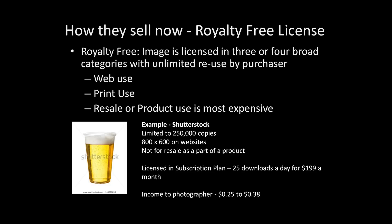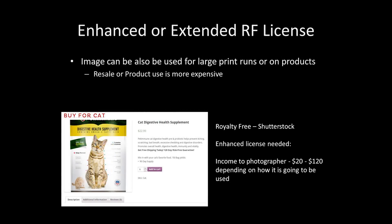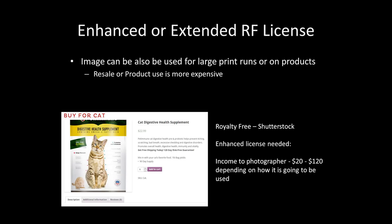On Shutterstock, many people have a subscription plan where they can download a certain number of images a day for $199 a month — I think 25 downloads a day. What the photographer gets is somewhere between $0.25 and $0.38 every time someone picks one of my images. The subscription plan restricts the user to simply using it on a website — that's where the $0.38 comes from.